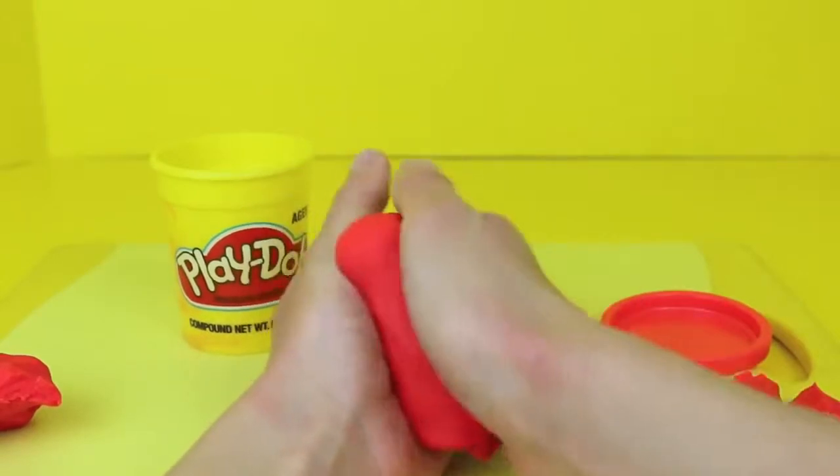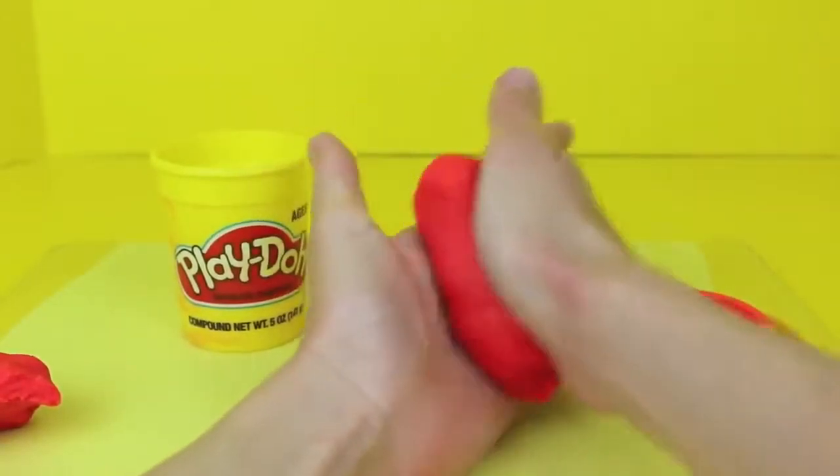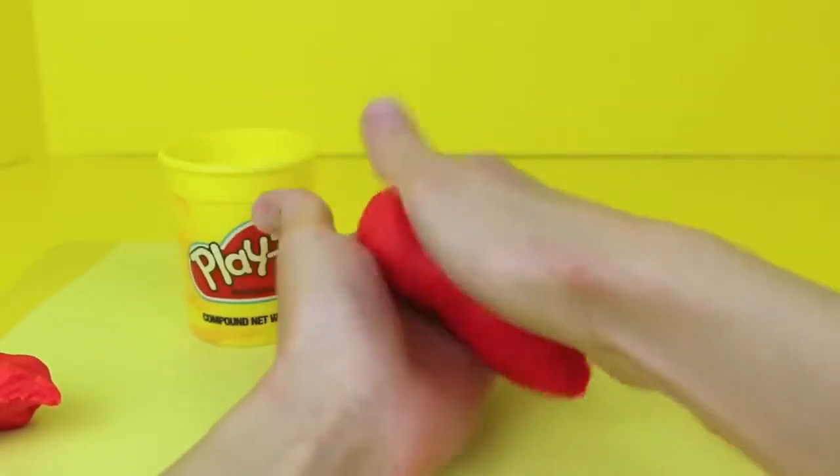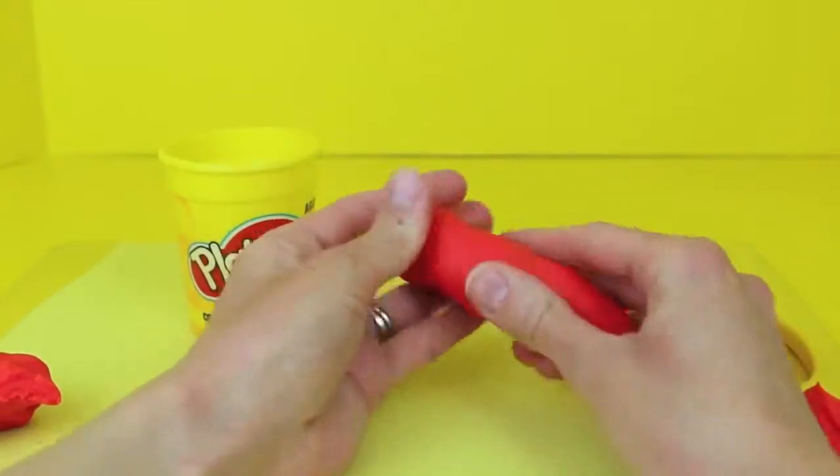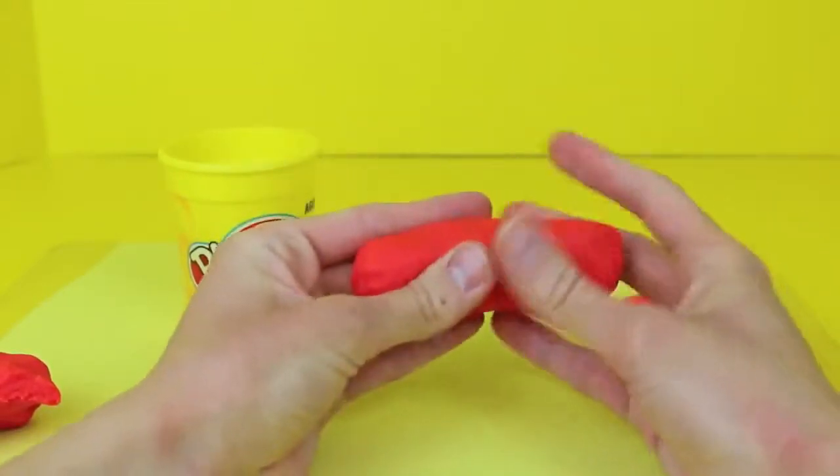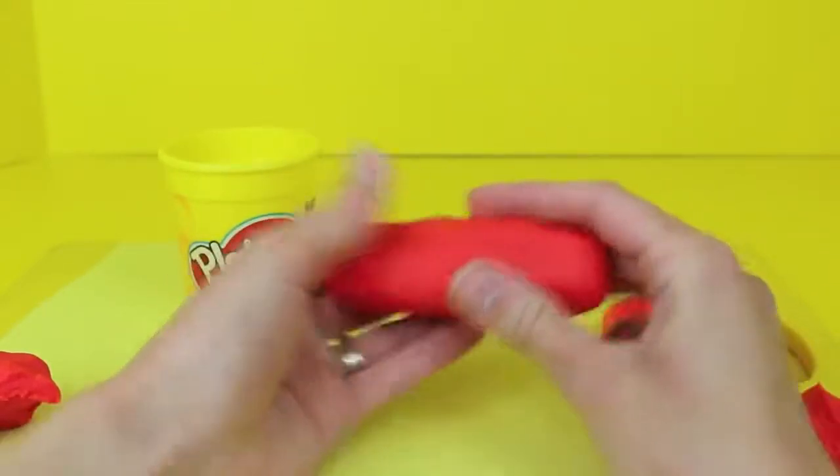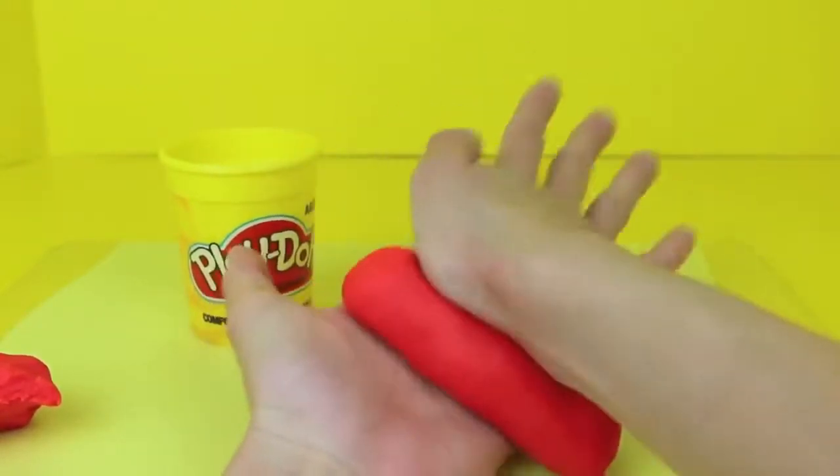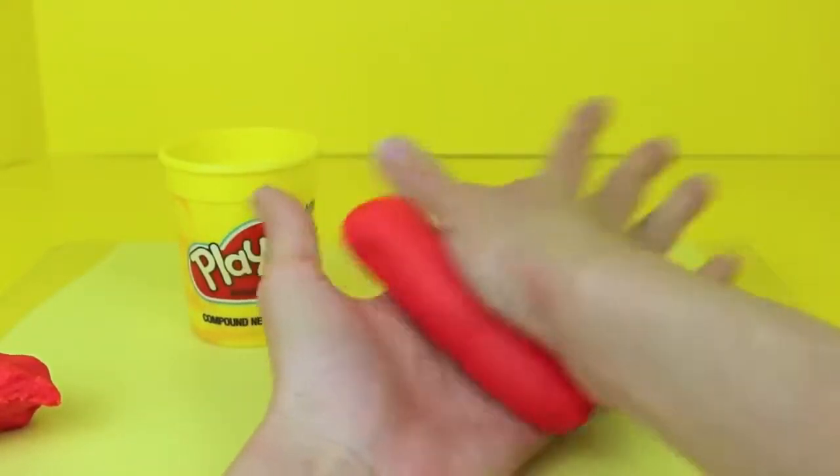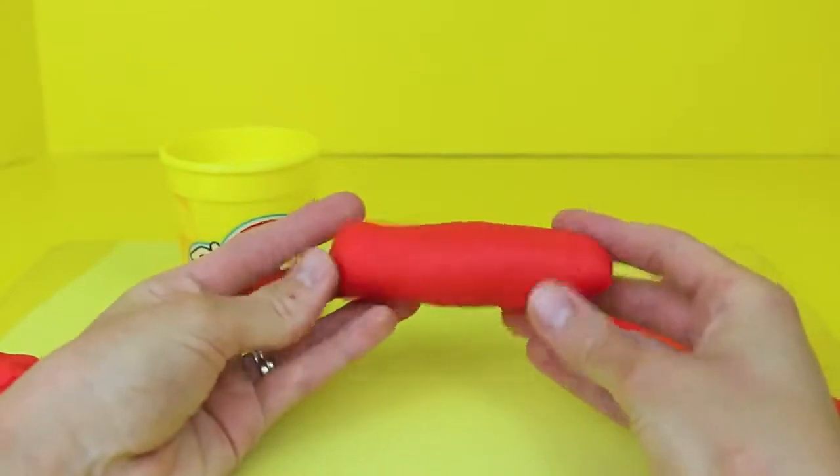Just in your hand roll out the Play-Doh into the shape of a hot dog. This is pretty easy. You'll want to roll it a lot just to make sure it's nice and smooth and then also pay attention to the ends. Make sure they're rounded. There you go. That ought to do it.